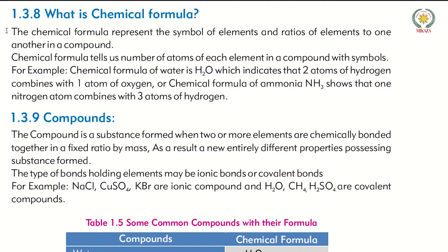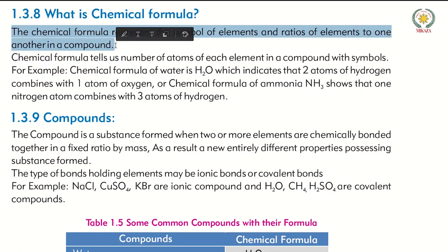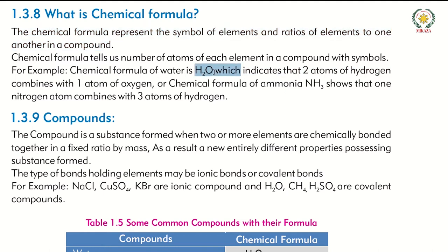The chemical formula represents the symbol of elements and ratios of elements in a compound. It tells us what elements are present and how many atoms of each. For example, carbon dioxide is CO2 — one atom of carbon and two atoms of oxygen. Water is H2O — two atoms of hydrogen and one atom of oxygen. Ammonia is NH3 — one atom of nitrogen and three atoms of hydrogen.